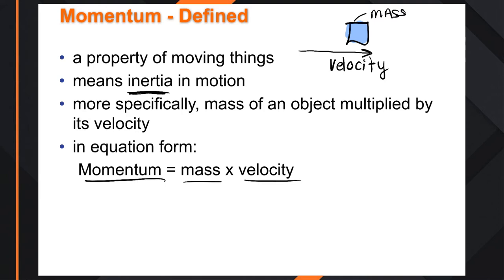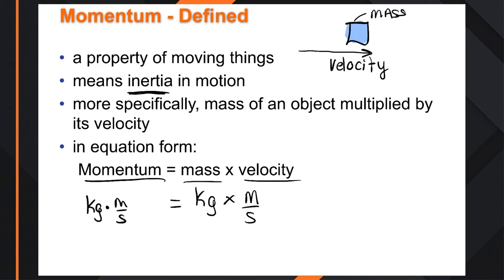The units of measurement: mass is measured in kilograms. Velocity depends on what we're looking at — if it's moving slowly you might use centimeters per second, but the standard we'll use is meters per second. The nice thing with momentum is we don't have to remember a new unit. Unlike force, where mass times acceleration gives us the Newton, here momentum's unit is simply kilograms times meters per second — we just rewrite what we have.